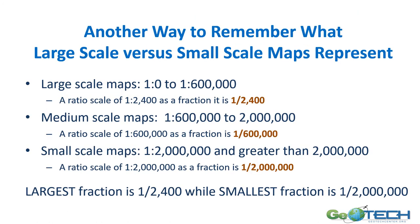Another way to remember what large scale versus small scale maps mean is to think about it as a fraction. A large scale map of one to twenty-four hundred is really the fraction one to twenty-four hundred parts. Medium scale, for example one to six hundred thousand, is also a fraction. Small scale, up to one to two million, is the fraction one to two million. The largest fraction is one to twenty-four hundred and the smallest is one to two million — another way to remember large scale versus small scale maps.